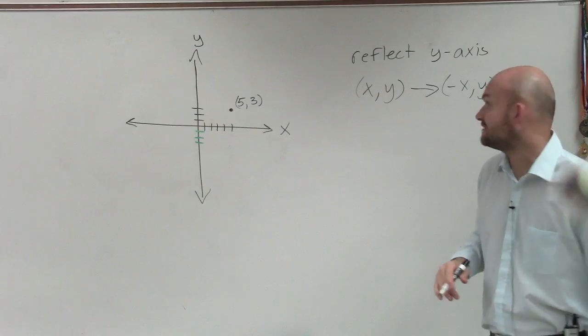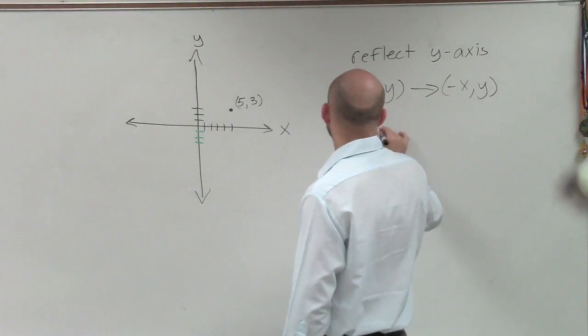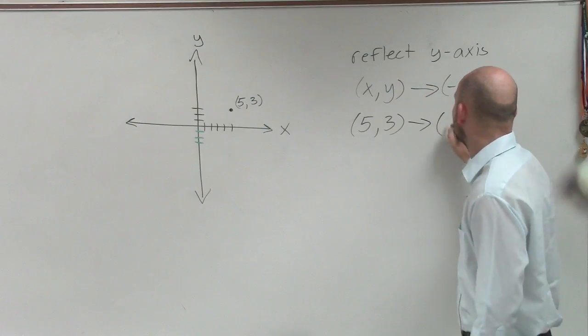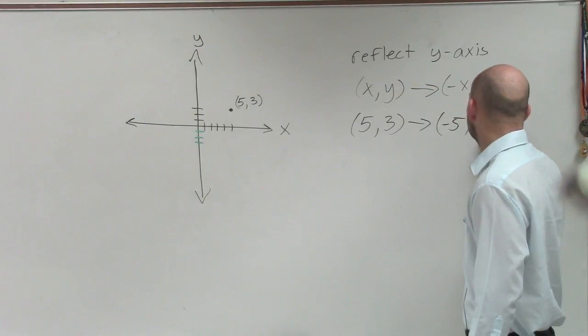So I look at my point here, and I have 5 comma 3. And now, as I reflect over the y-axis, now it turns to negative 5 comma 3.